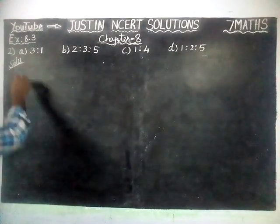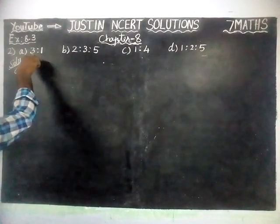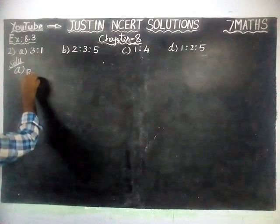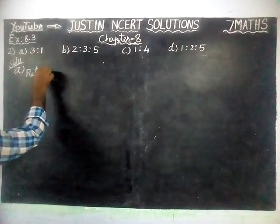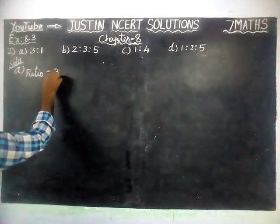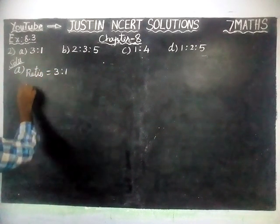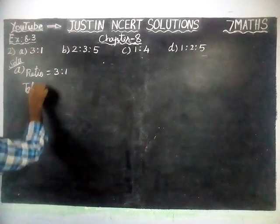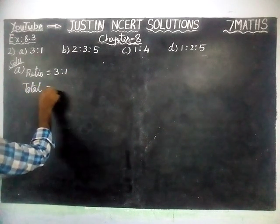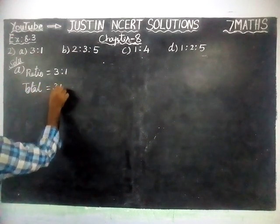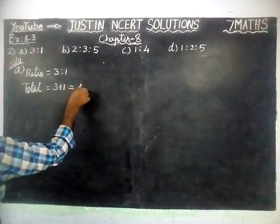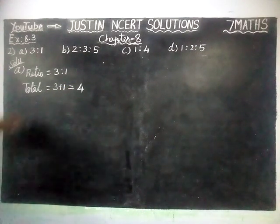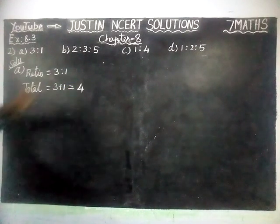The first question is the ratio 3 is to 1. The total of this ratio is equal to 3 plus 1, which is equal to 4. So totally, out of 4 parts, 3 is to 1 is there.